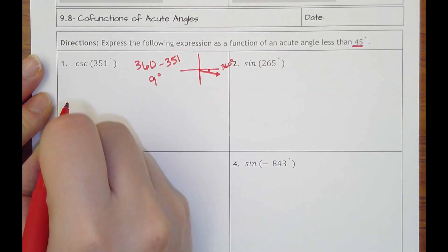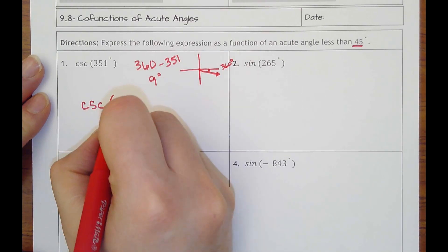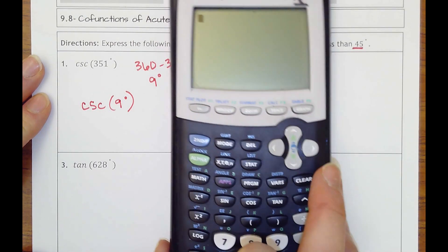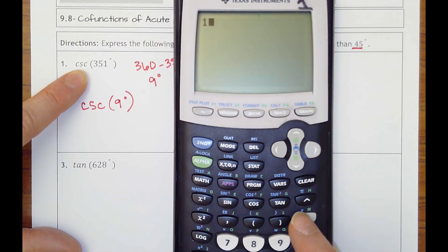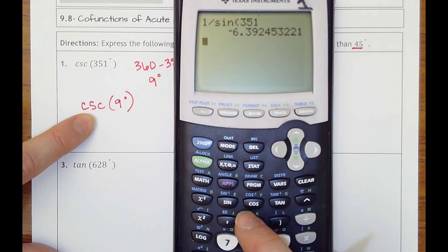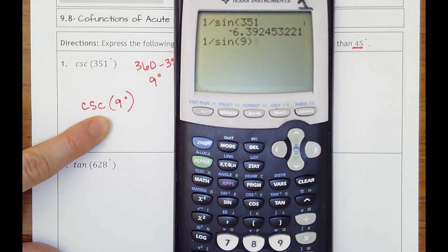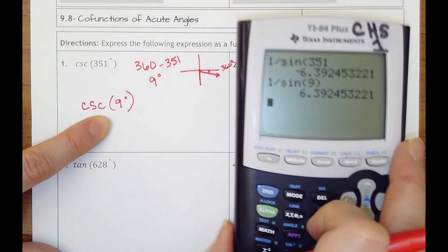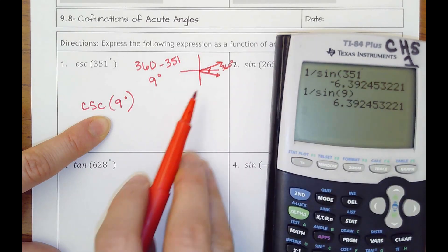And so I could write this as cosecant of 9 degrees. And what I would do is always check. So remember, we don't have a button for cosecant, but the reciprocal of that is sine. So I could do 1 over sine of 351. I'm going to get some kind of weird decimal. If I do that same thing with 9 degrees, 1 over sine of 9, why didn't you get the same thing?